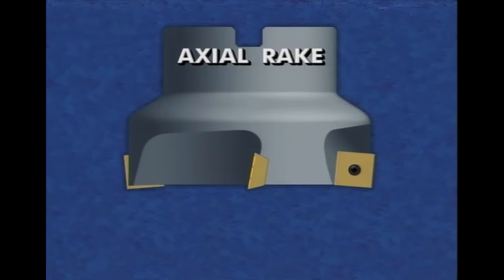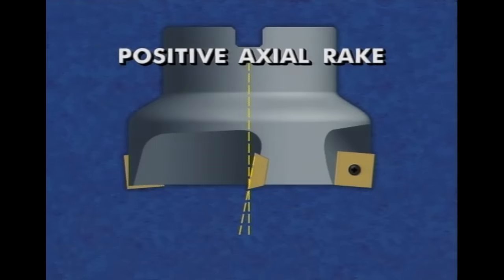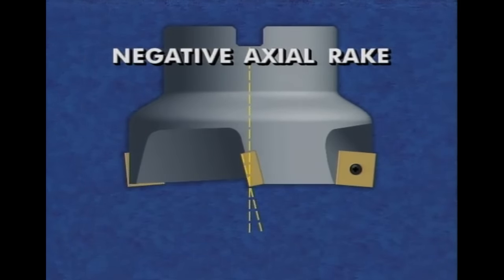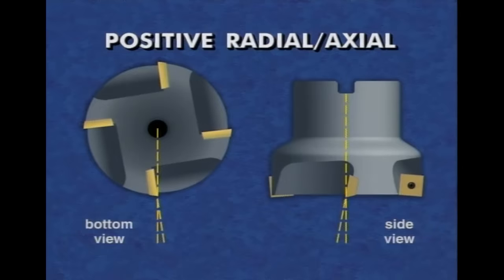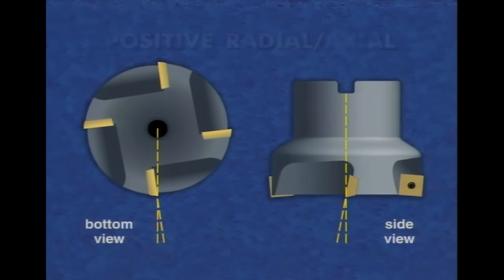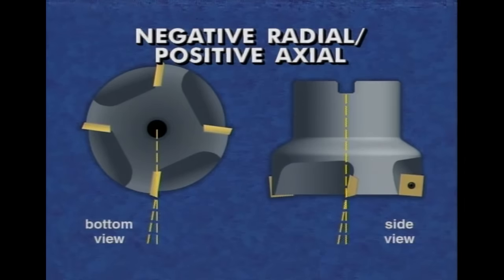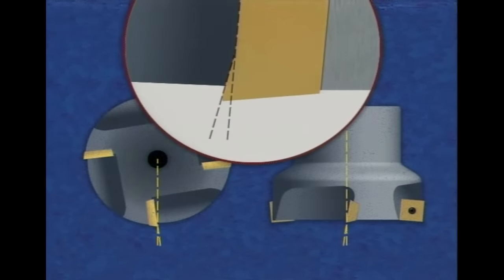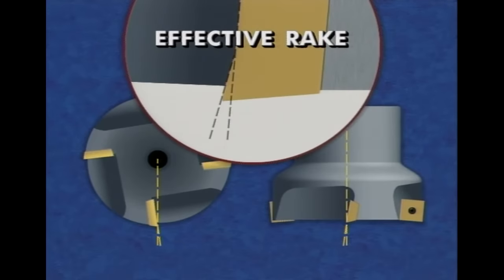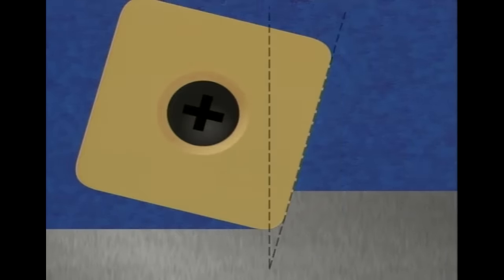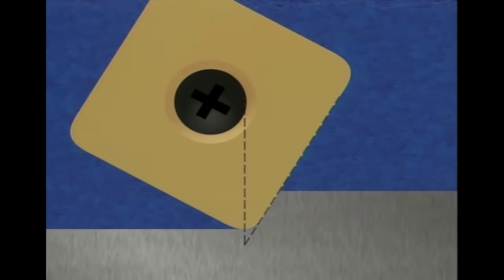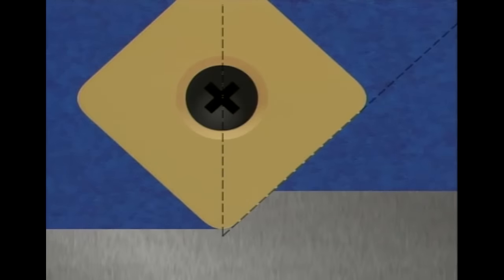The axial rake is the angle measured between the insert face and an axial line or plane, and may also be positive or negative. The combination of axial and radial rake angles yields three geometries of milling cutters: negative radial and axial, which offers the strongest edges but generates the greatest cutting forces; positive radial and axial, which provides the freest cutting; and negative radial, positive axial, which presents a strong edge to the work but pulls the chip up. The cutter's lead angle influences cutting forces and chip thickness — the greater the lead angle, the greater the axial force and the longer but thinner the chip. Standard milling cutters come in zero, fifteen, thirty, and forty-five degree lead angles.